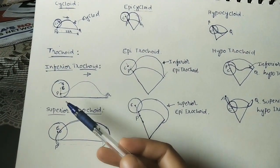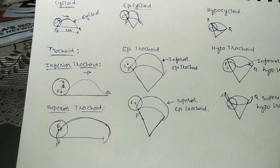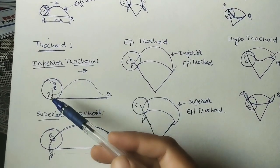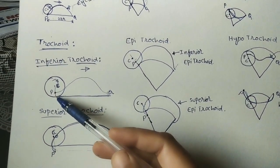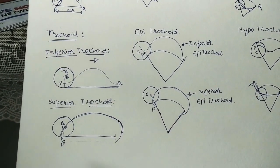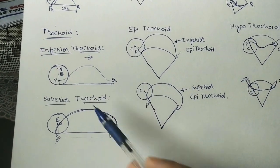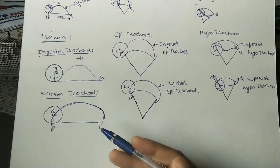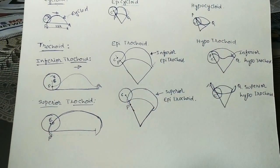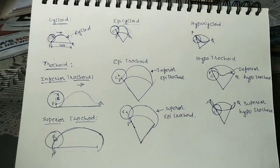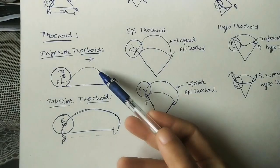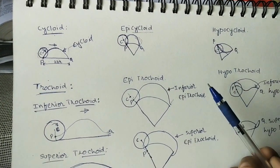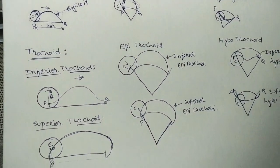So trochoids are similar to cycloids — the only difference is that P is either inside or outside the circle. A trochoid is defined as the path traced by a point which is inside or outside a circle when the circle rolls on a surface without slipping. Remember the names according to the position of point P. We will draw these curves in the next class. I have given the cycloid link in the description box — please check it. Thank you for watching.